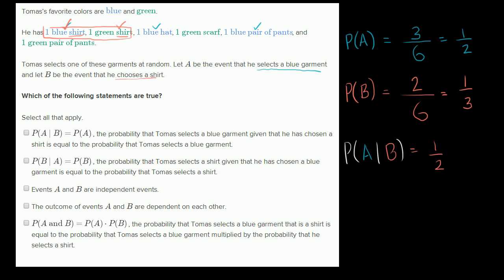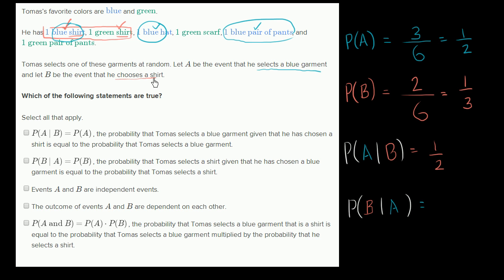Now let's look at the probability of B given A. Assuming that we've picked a blue garment — so it's either the blue shirt, blue hat, or blue pants — what's the probability that we have also chosen a shirt? There are three equally likely possibilities where we have a blue garment, and only one of those involves a shirt. So probability of B given A is one third.